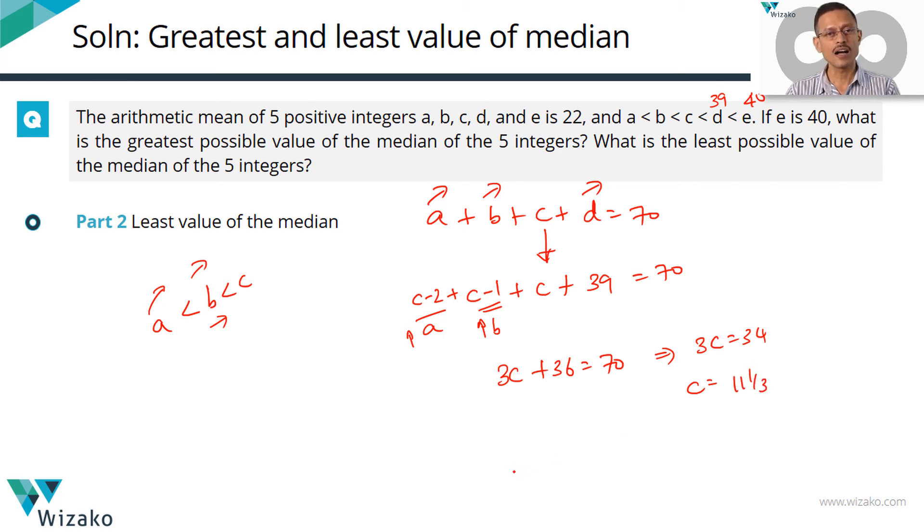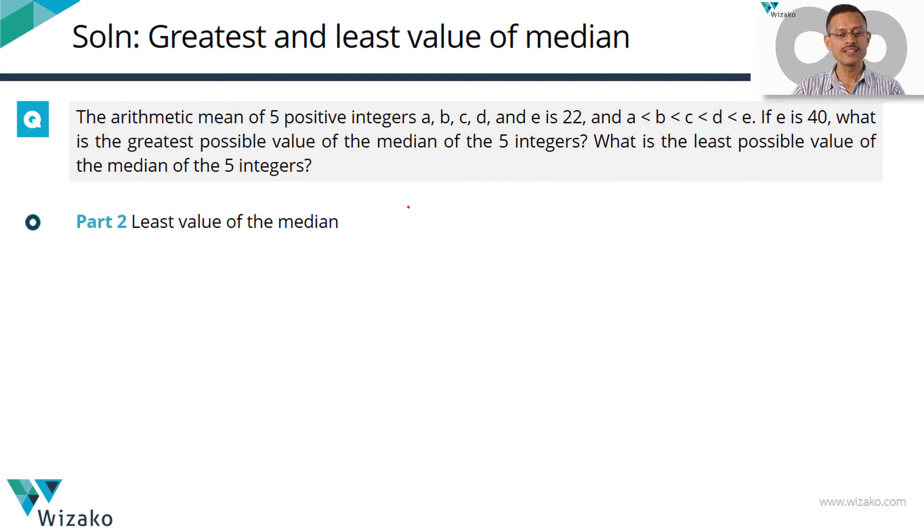This is the absolute least value possible for C. But the question does not end here because we know these numbers are positive integers. So we need to tweak it further. The least mathematical numerical value possible for C is 11 and one third. So the least value possible for B and A will be 10 and one third and 9 and one third. We know these are all integers. So least integer value possible for C which is more than this has to be 12.